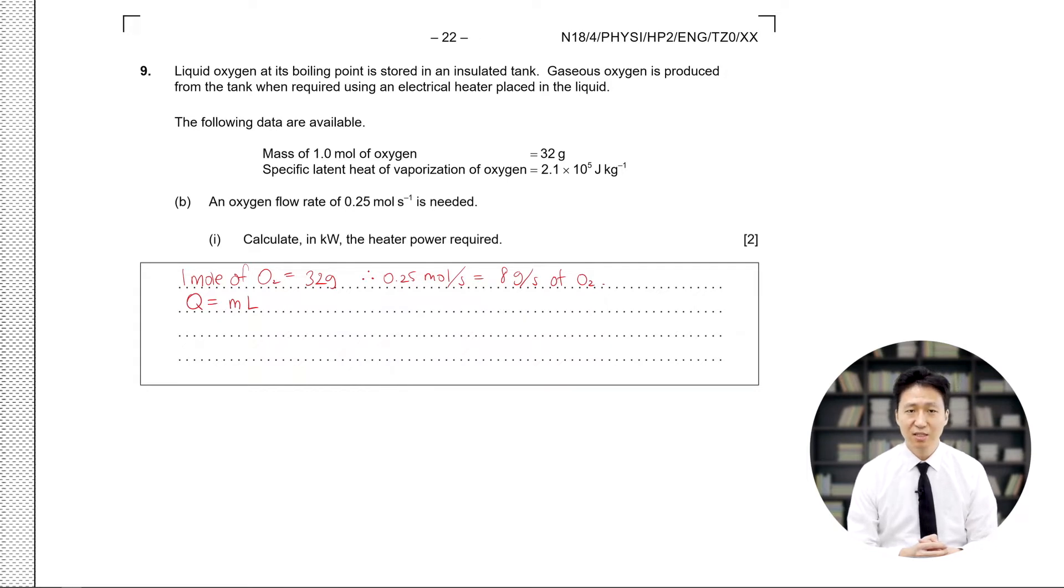Next step. We know that the heat is going to be equal to the mass multiplied by the latent heat of vaporization. Therefore, power is this heat divided by time. Therefore, mass divided by time multiplied by the latent heat of vaporization will equal the power required to get this flow of oxygen. The problem already gives us the mass per time unit, which is 8 grams per second multiplied by the latent heat of vaporization will give us 1680 joules per second or approximately 1.7 kilowatts.